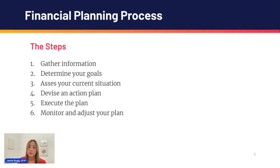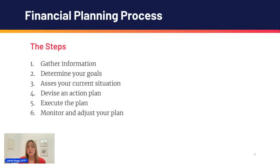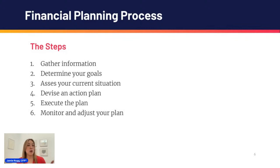First and foremost, we want to gather information — what do I have, what do I need, where am I at? What accounts do I have and what do I have access to in terms of saving and investing? Do I have a company 401k, 403b, or 457 plan? Step two is to really think about those goals we talked about at the very beginning — what is most important to me, what matters to me, what am I trying to aim for in one year, five years, ten years from now?